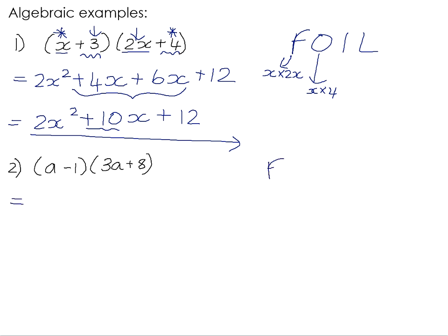If we have a look at number 2, we need to remember to do FOIL. So the firsts, a times 3a gives us 3a squared, because this is a to the power of 1 and a to the power of 1. And when you multiply powers with the same base, you add the exponents. So there's the firsts. The outers would be the a and the positive 8. So that would give us positive 8a. The inners would be the negative 1 and the 3a, which gives us negative 3a. And the last would be negative 1 times positive 8. A negative times a positive is negative 8.